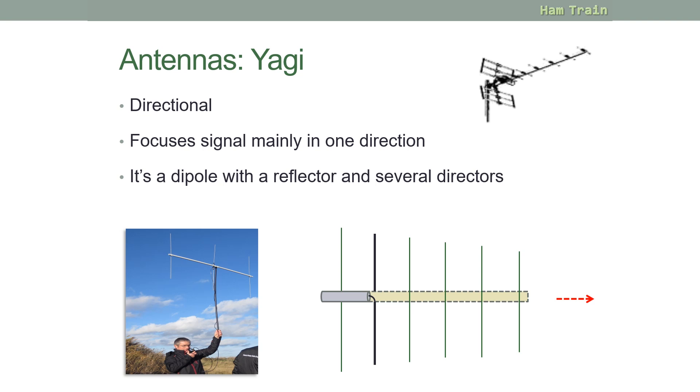And finally, we're going to talk about the Yagi antenna. If you look on the roof of most properties, you'll notice a TV aerial. This is a Yagi antenna. Now these are directional, which means they focus the signal mainly in one direction. If you actually look closely, you'll see that this is a dipole. So there are the two elements of our dipole, with a reflector at the back to help push the signal in the right direction, and several directors in the direction of travel. So here's our coax being fed into the dipole, pushed into the direction of travel.